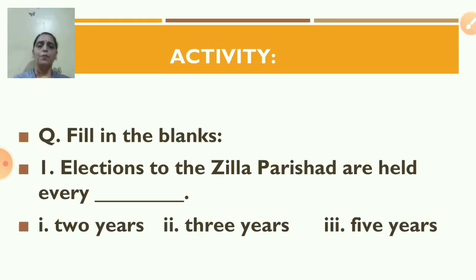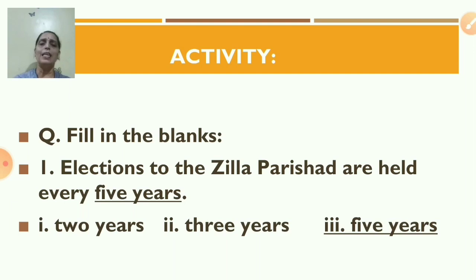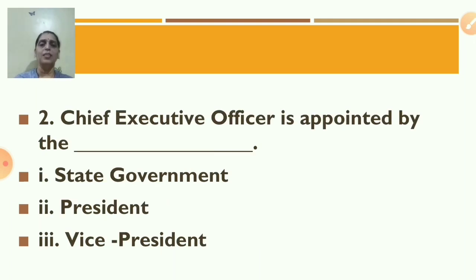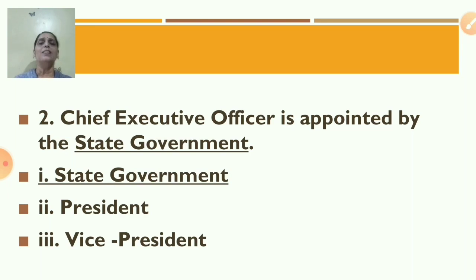Activity — fill in the blanks. Choose the right option. First: elections to the Jilla Parishad are held every — (a) two years, (b) three years, (c) five years. Answer: five years. Second: the Chief Executive Officer is appointed by the — (a) state government, (b) president, (c) vice president. Answer: state government — the Chief Executive Officer is appointed by the state government.